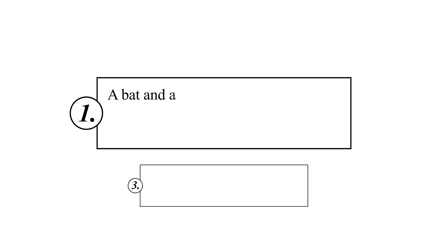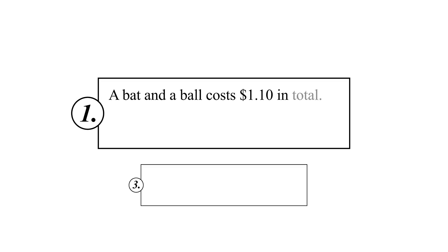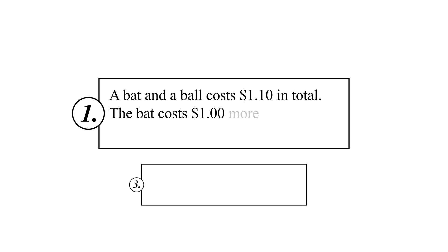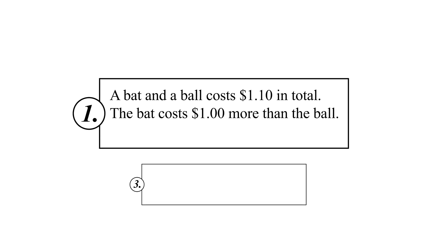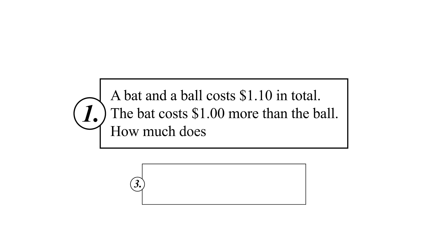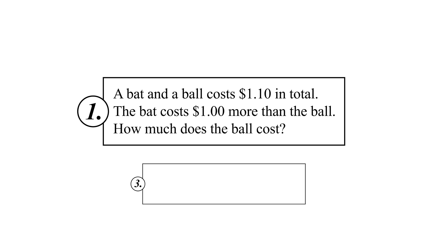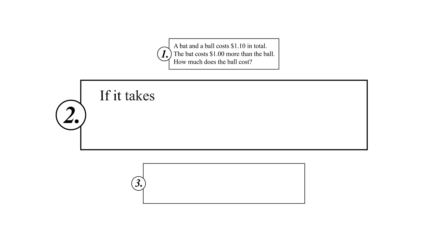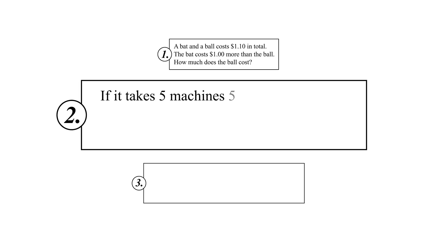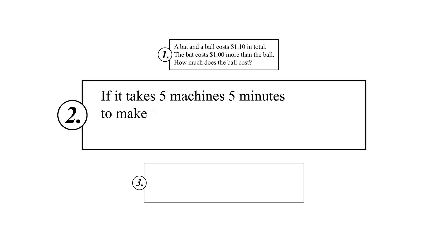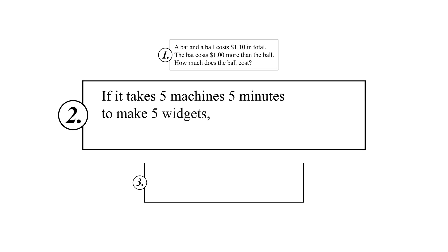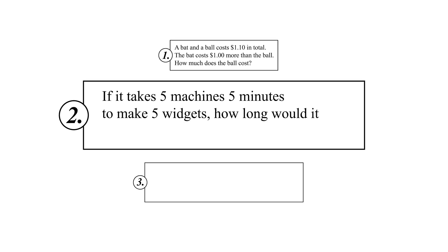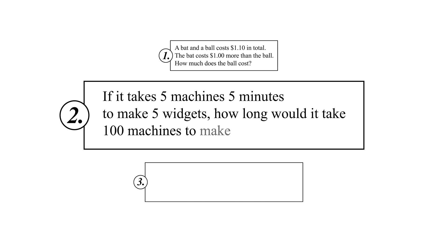A bat and a ball cost $1.10 in total. The bat costs $1 more than the ball. How much does the ball cost? Problem two: if it takes five machines five minutes to make five widgets, how long would it take 100 machines to make 100 widgets?